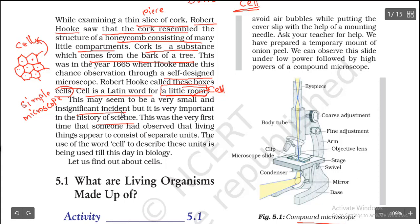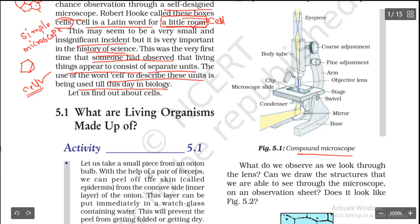It was a simple observation — he took bark, observed it in a microscope, found hexagonal compartments, and called them cells. It may not seem like a big thing, but it created history in science. This was the very first time that someone observed that living things appear to consist of separate units. From this, they concluded that all living things are made up of small, separate units. The word 'cell' to describe these units has been used in biology till this day, from 1665 to the present.